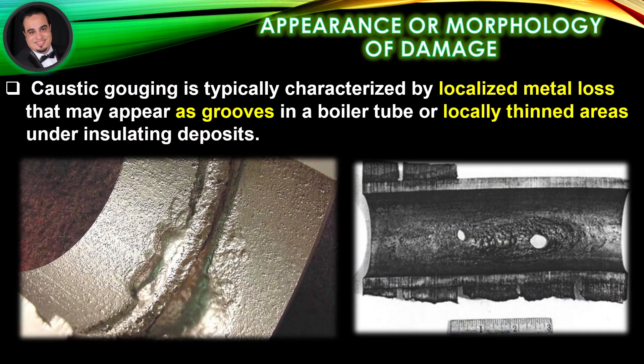Appearance or morphology of damage: As illustrated in figures, caustic gouging is typically characterized by localized metal loss that may appear as grooves in a boiler tube, or locally thinned areas under insulating deposits.